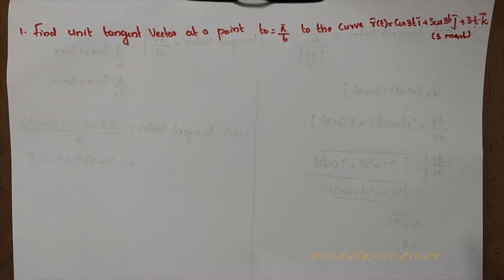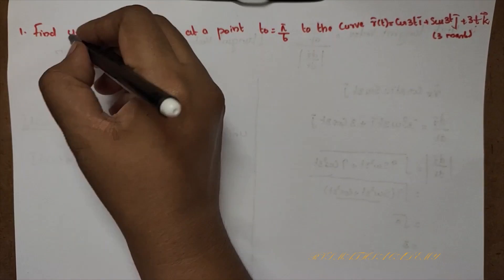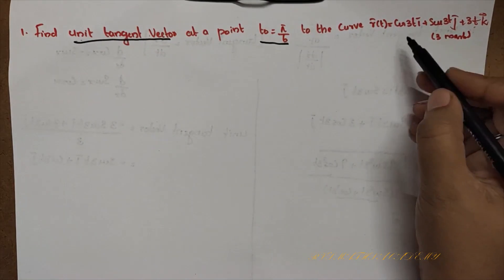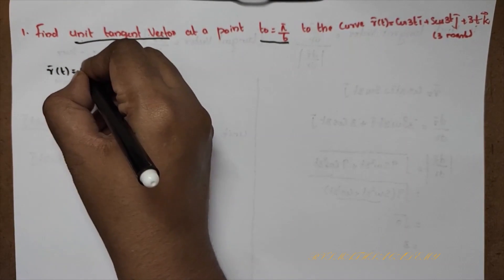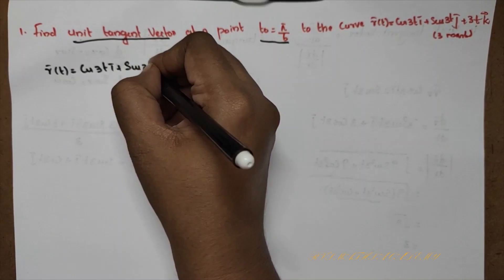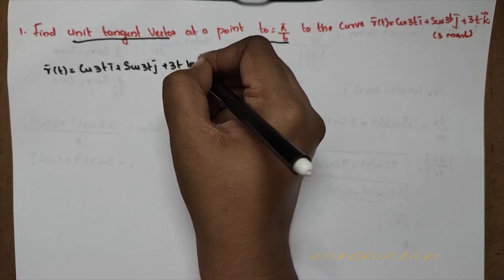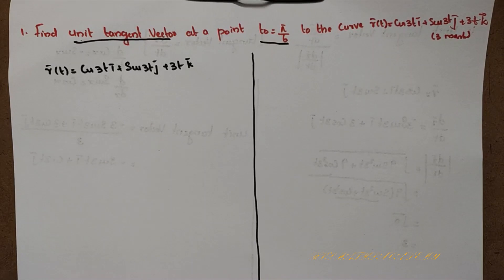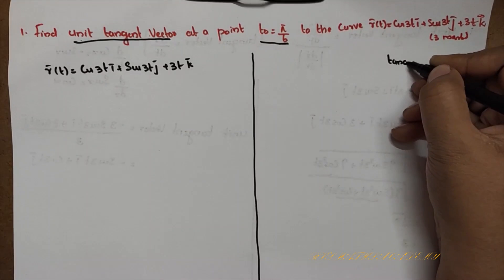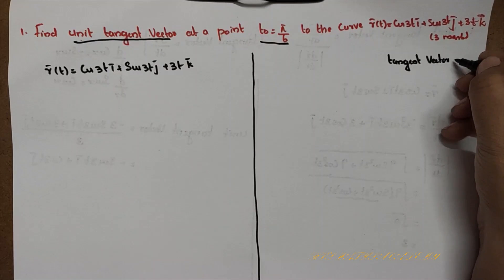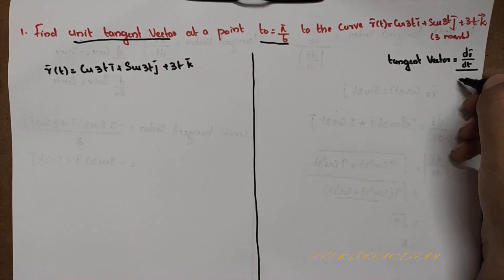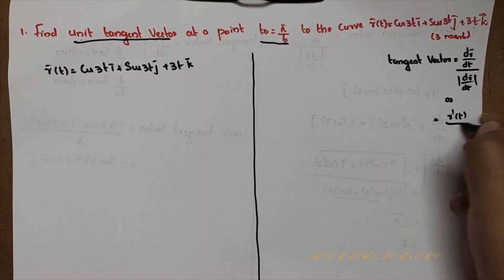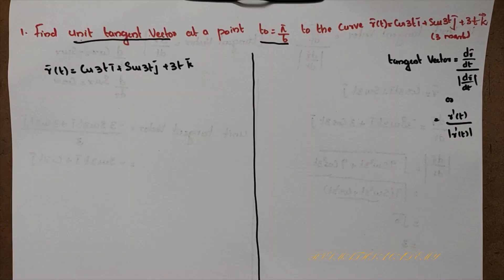First question is: find the unit tangent vector at the point t₀ equal to π/6 to the curve r(t) equal to cos3t·i plus sin3t·j plus 3t·k. To find the unit tangent vector at the point t₀, we use the formula for the unit tangent vector, which involves dr/dt.